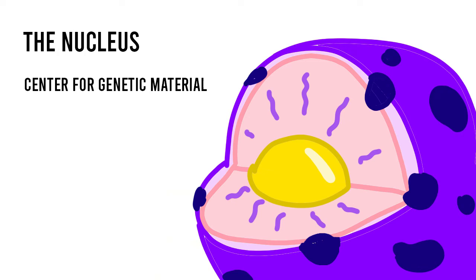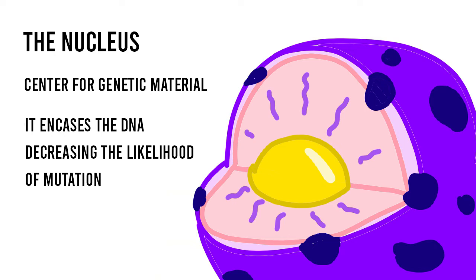Overall, the nucleus as a structure is evolutionarily advantageous because it encases the DNA, thus providing extra protection and decreasing the likelihood of mutation.